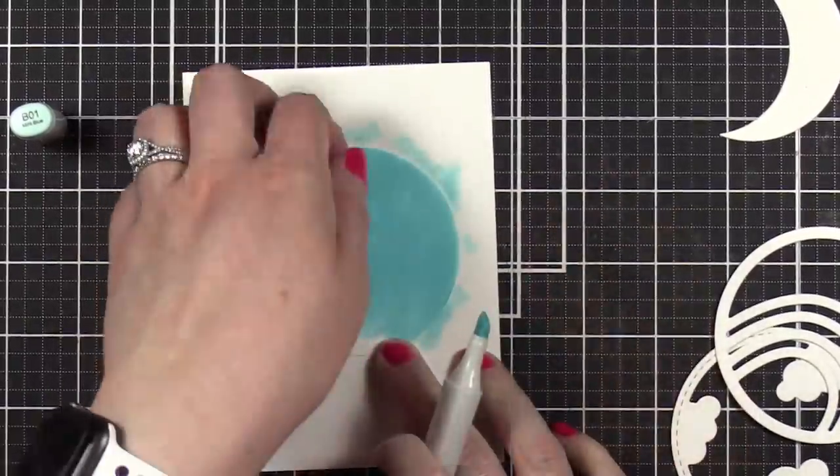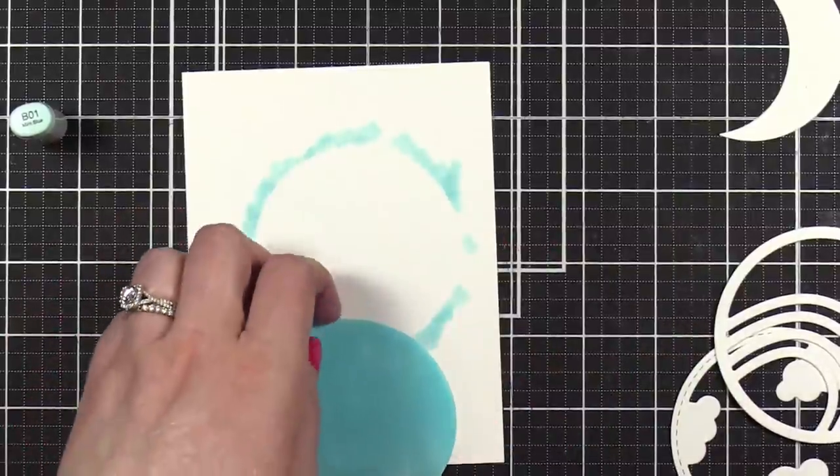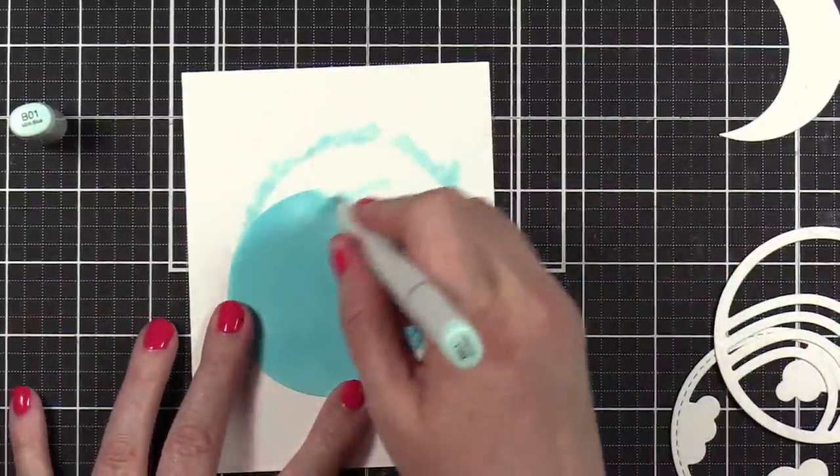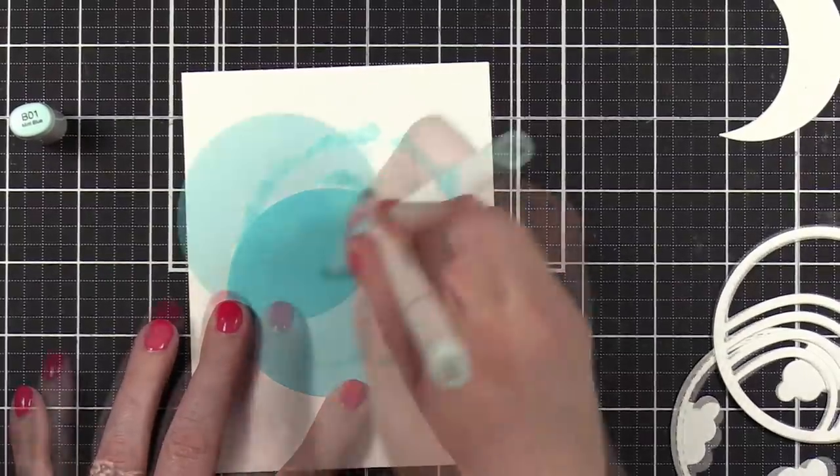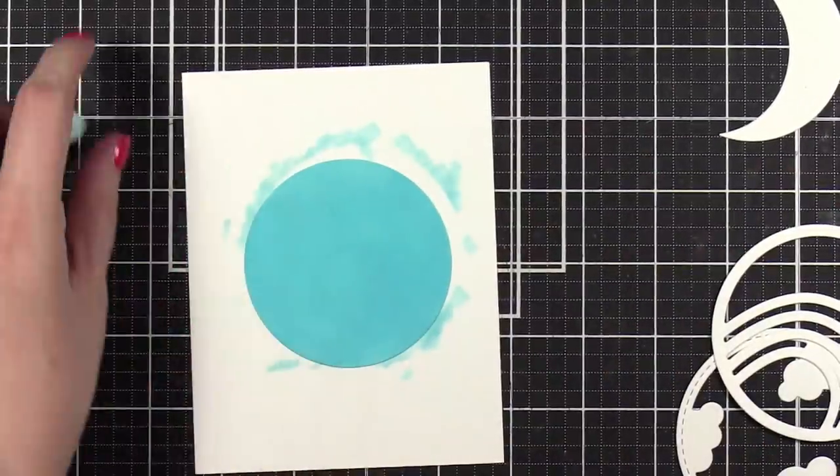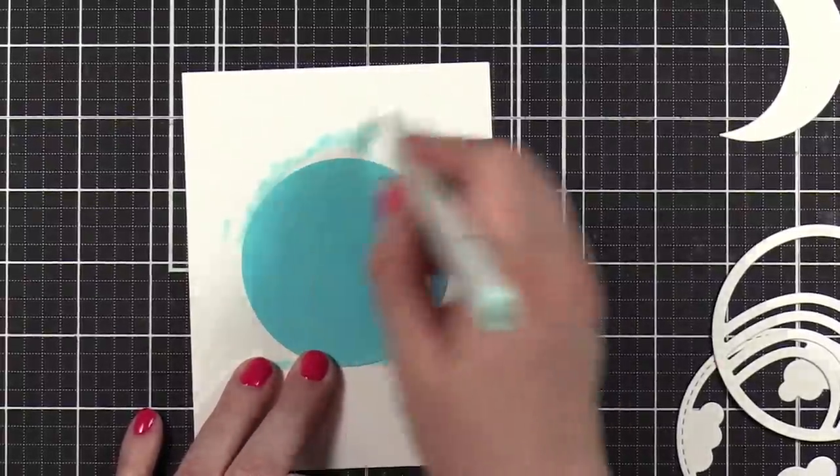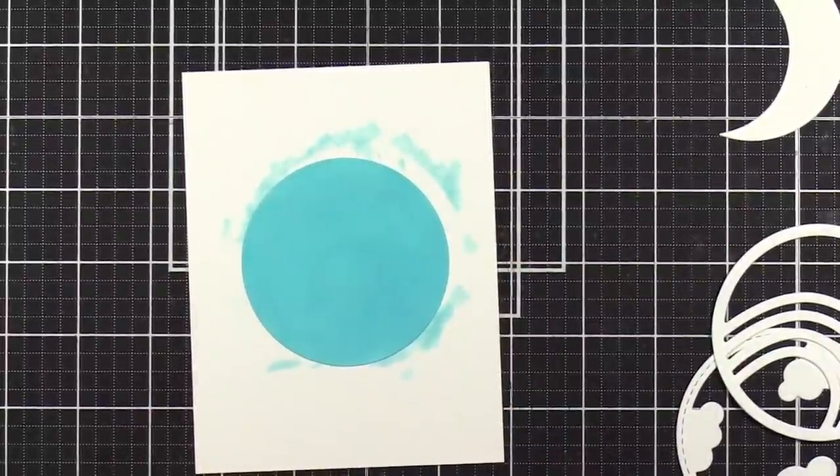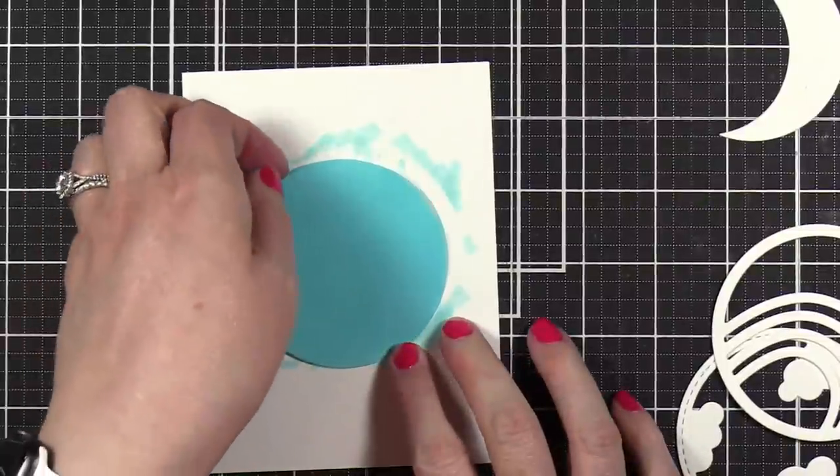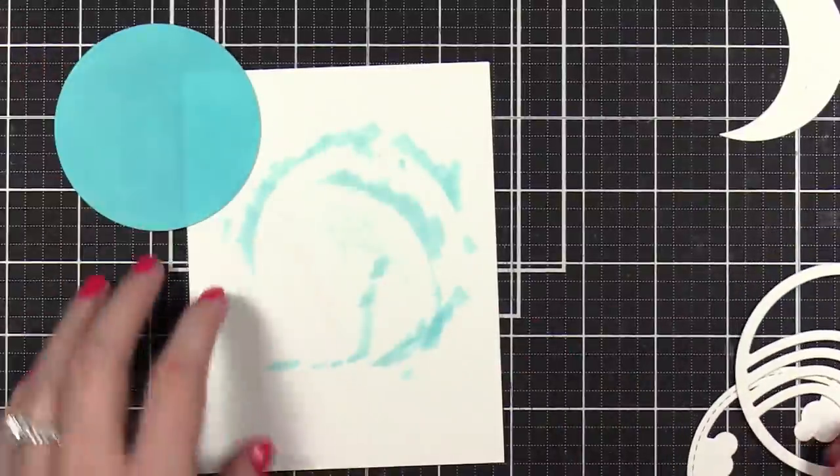I'm going over and over and over, trying to get as solid as possible. That blue is so pretty. That's gonna be the perfect blue for our little sky background.